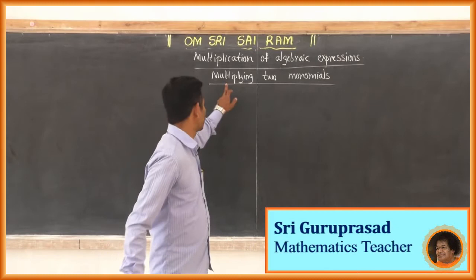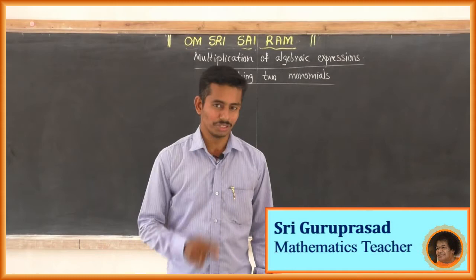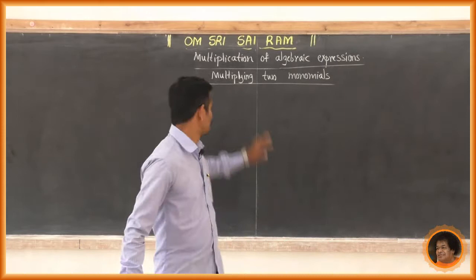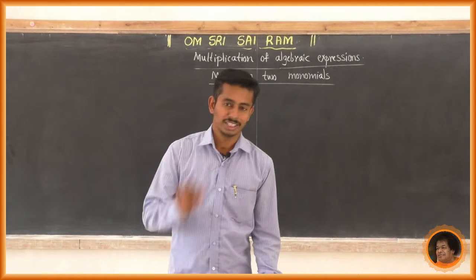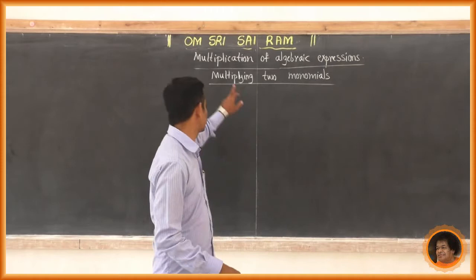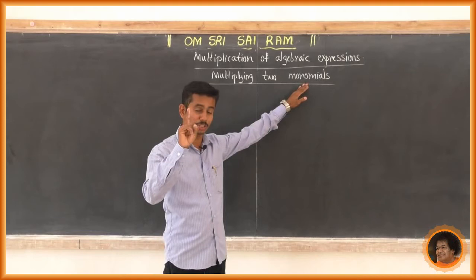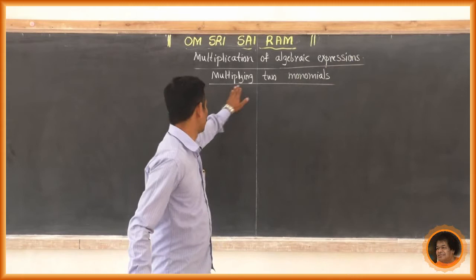What do you mean by monomials? Monomial means an algebraic expression which contains a single term — that is a monomial. Binomial means an expression which contains two terms — that is called binomial. Now, multiplying two monomials.